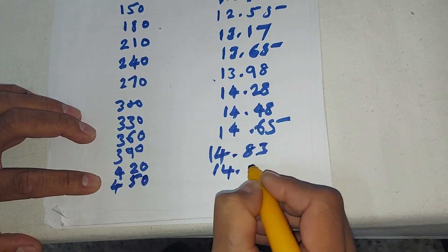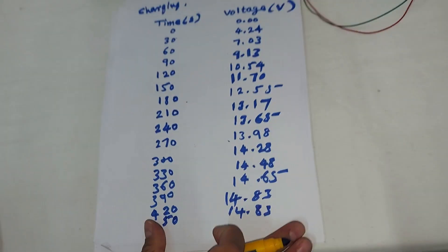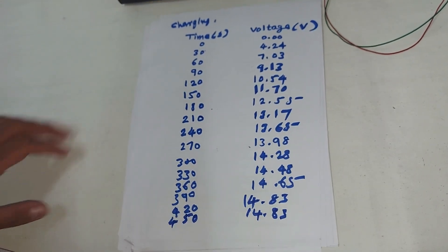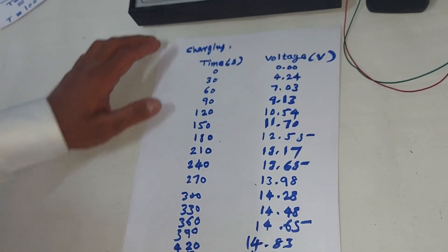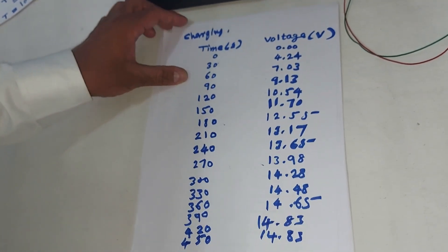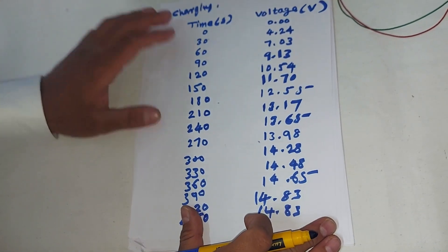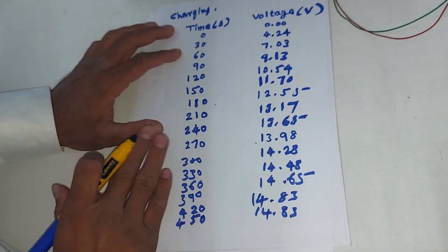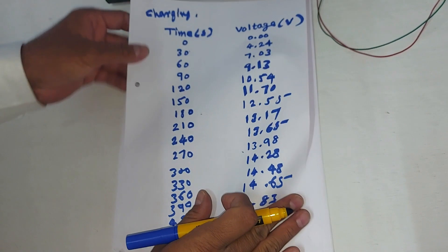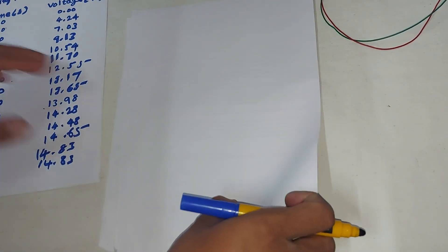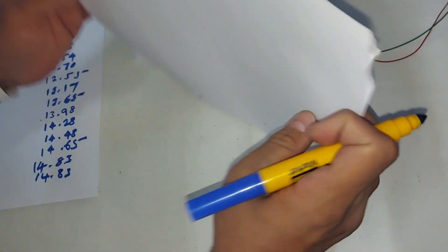The reading is almost constant now for all further readings, which means the capacitor is fully charged at this point. Now we have to plot a graph of voltage against time for charging of the capacitor.